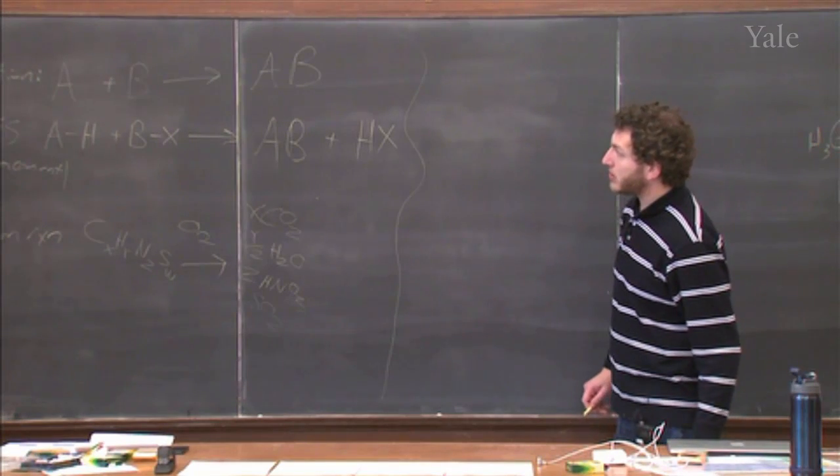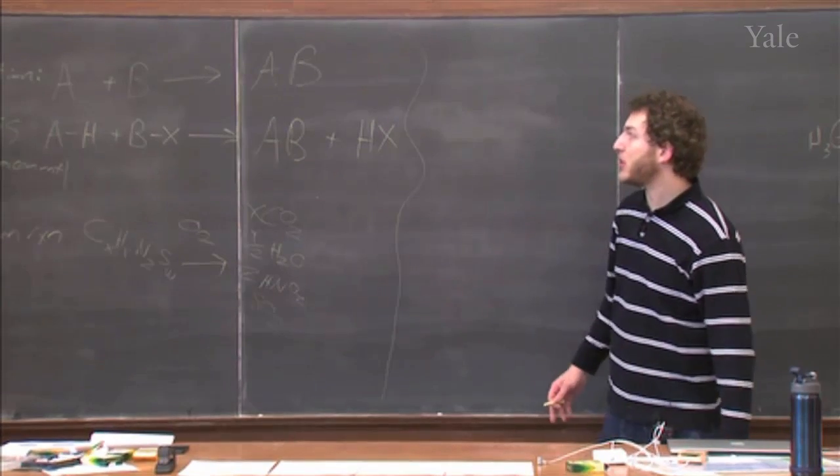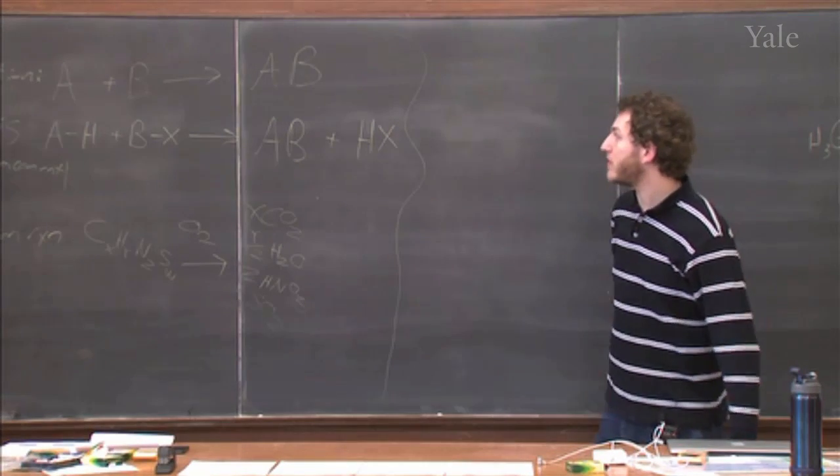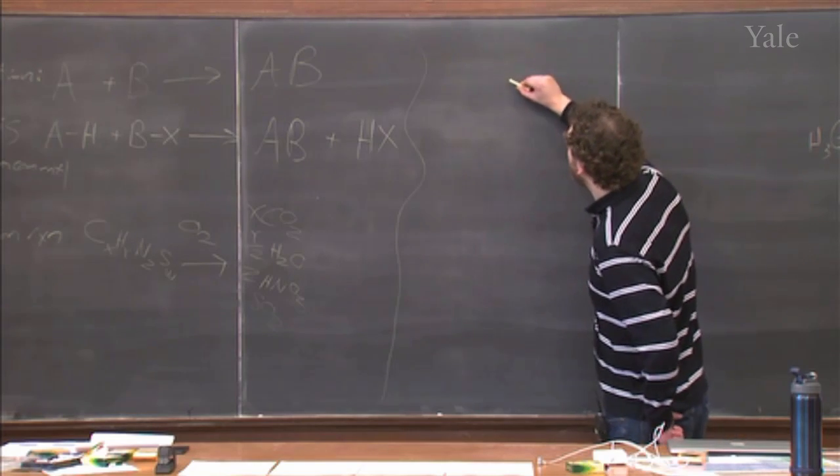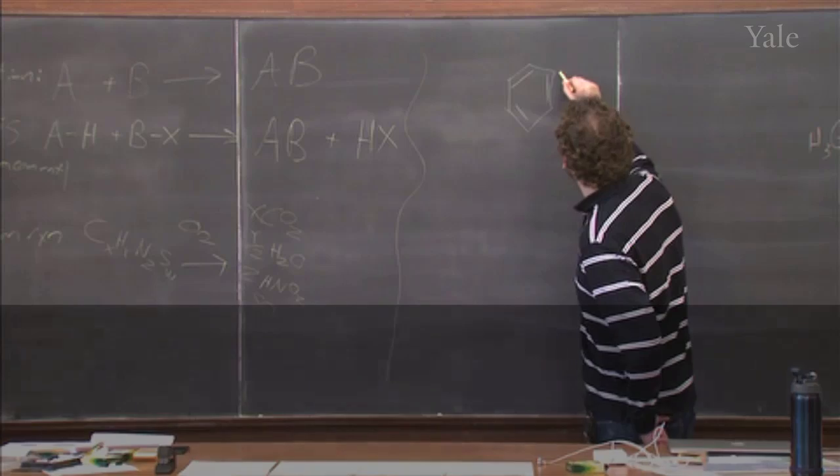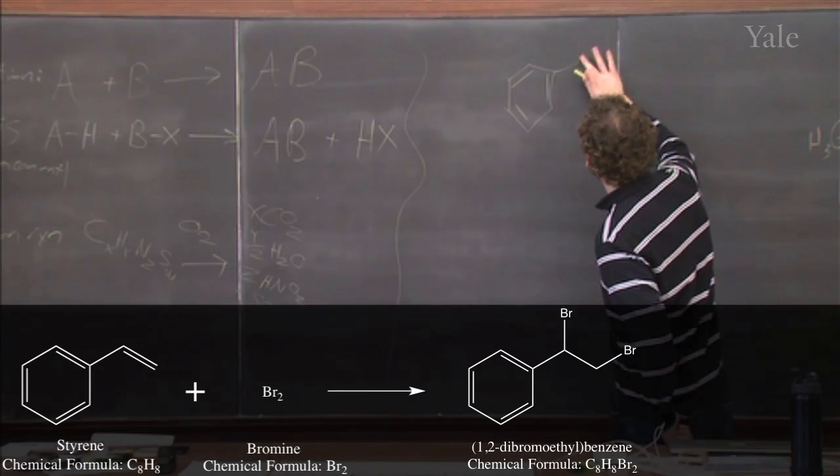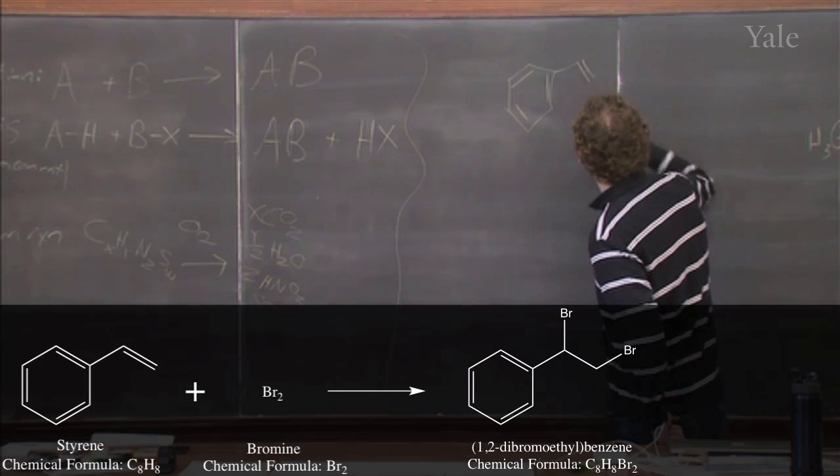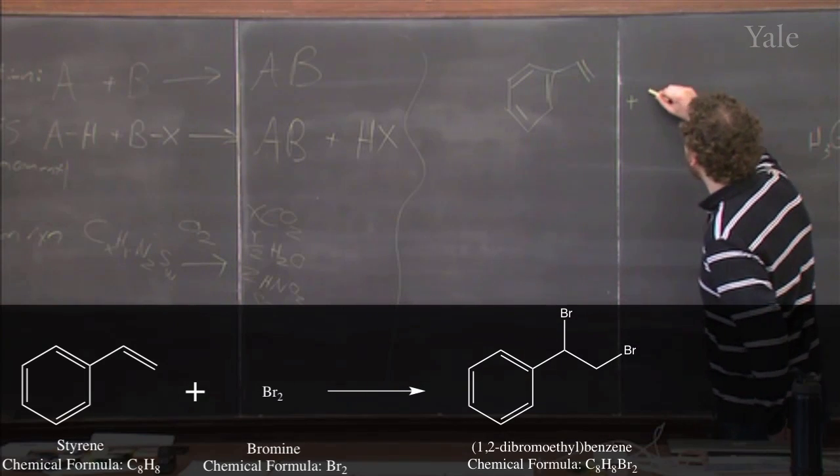So for some more explicit examples, rather than just using A's and B's, we'll look at some examples of these. So one example of a combination reaction is the reaction of styrene with bromine.